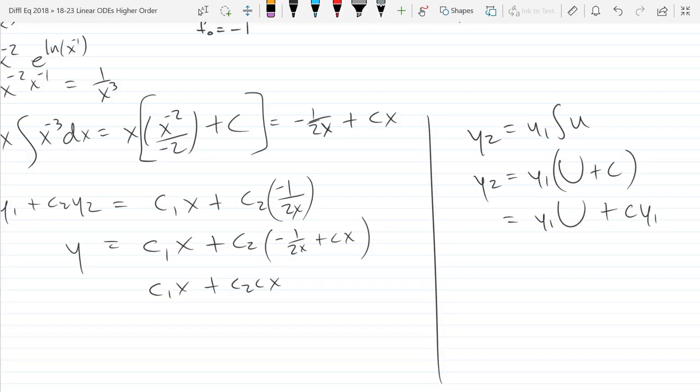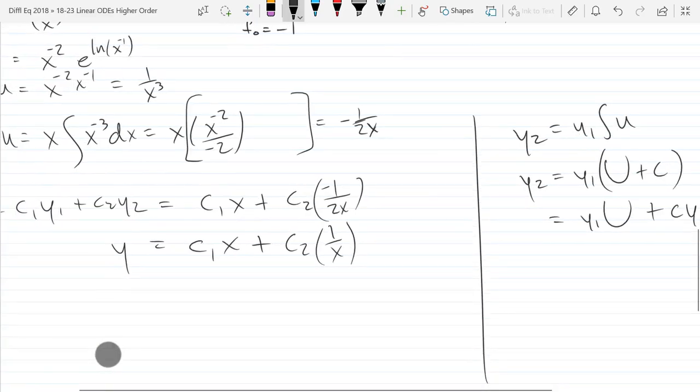We will not do a plus C right there, and that means your algebra will be a little bit shorter if you do it this way. So we get C1 X plus C2 one over x. That will be the version we'll go with.